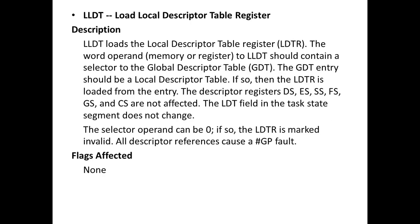LLDT (load local descriptor table register) loads the LDTR. The word operand to LLDT should contain a selector into the Global Descriptor Table (GDT); the GDT entry should be a local descriptor table. If so, the LDTR is loaded from that entry. The descriptor registers DS, ES, SS, FS, GS, and CS are not affected. The LDT field in the task state segment does not change. If the selector operand is zero, the LDTR is marked invalid and all descriptor references cause a GP fault. None of the flags are affected.